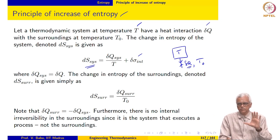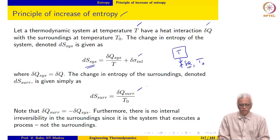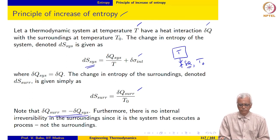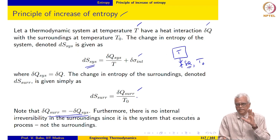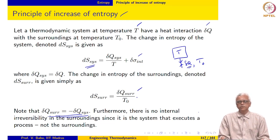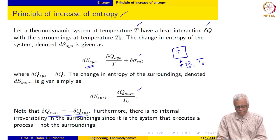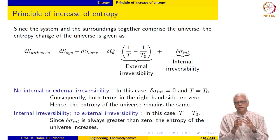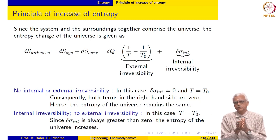The change in entropy of the surroundings is only due to entropy transfer. It is delta Q surrounding over T naught, and based on our sign convention, delta Q surrounding is equal to minus delta Q sys. The change in entropy of the surroundings is only due to entropy transfer. The system is the one executing the process. Combining the entropy change of the system and the surroundings, we get the entropy change of the universe.